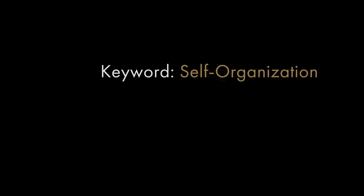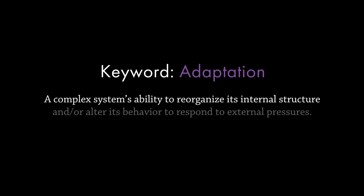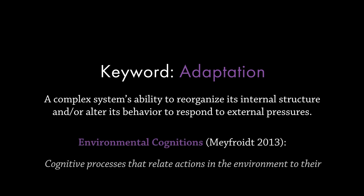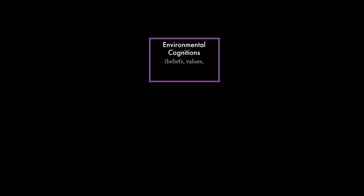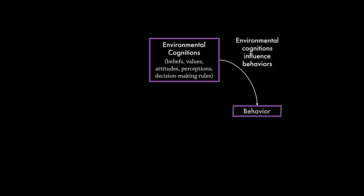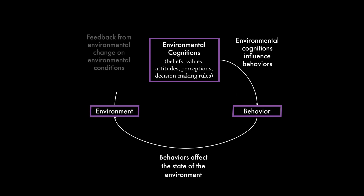Finally, emergence and self-organization are what enable complex systems to be adaptive. Adaptation is a complex system's ability to reorganize its internal structure and/or alter its behavior to respond to changes in its environment. The environmental cognitions framework is useful for thinking about this process in the context of human adaptation to environmental change. Environmental cognitions include the decision-making process and various factors that influence decision-making, such as attitudes, beliefs, and values, used to select a behavioral option. That behavior affects a change in the environment, and if that change is substantial, may create a discernible feedback to environmental conditions, which in turn affect environmental cognitions.